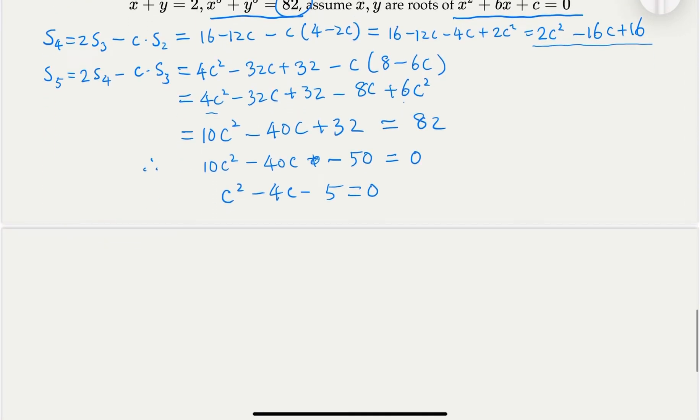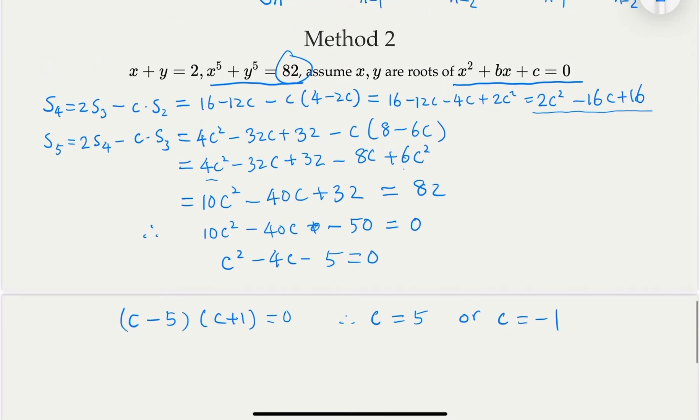How do you solve this quadratic equation? You factor it. So what you get is c minus 5, c plus 1 equal to 0. So c would equal to 5, or c equal to negative 1. What is c? Earlier we said that x, y are the roots of this quadratic equation here. And b we know is negative 2.